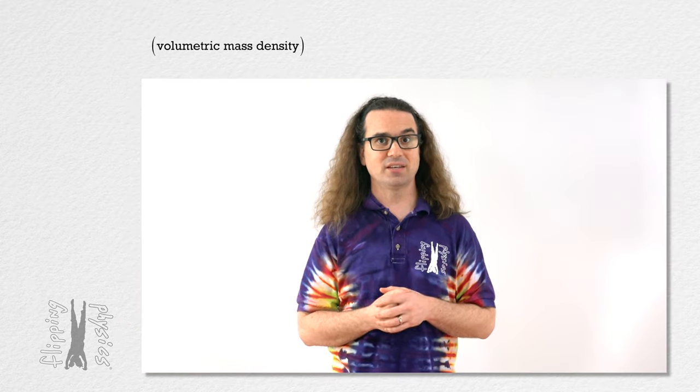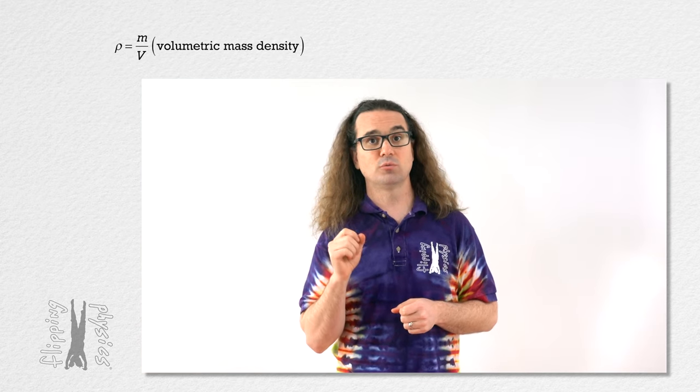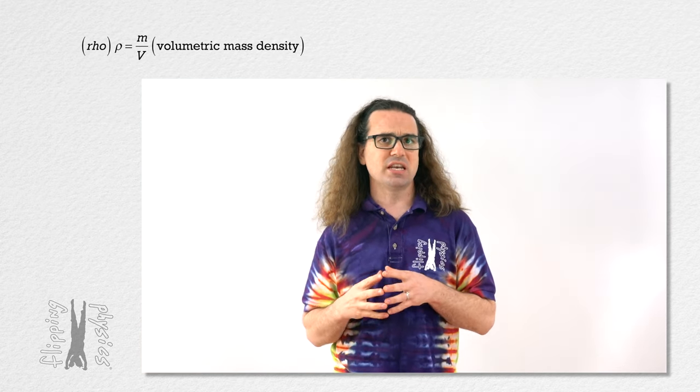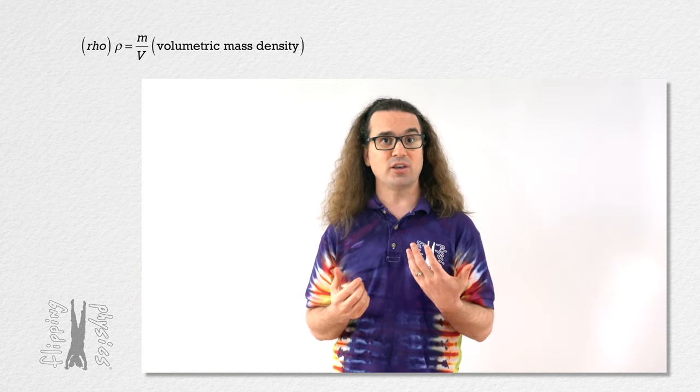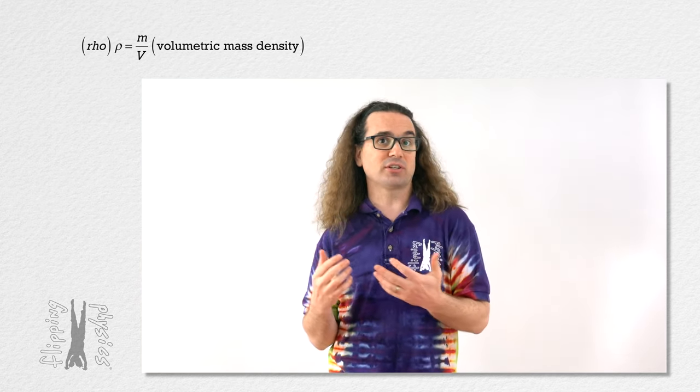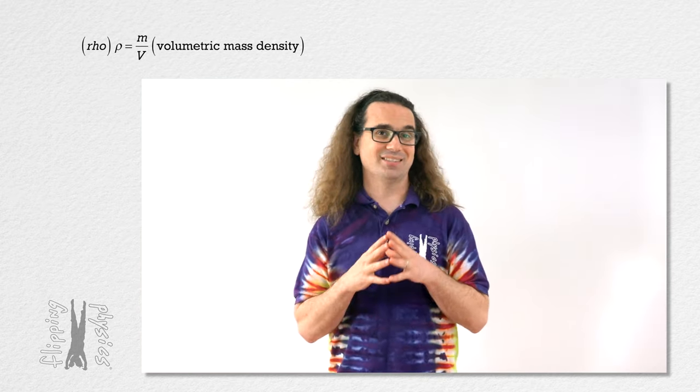Three different kinds of density? Yeah, I thought there was only one called density. Right. Let's start with the one you are most familiar with, which is volumetric mass density, rho equals mass divided by volume. This is actually not the only type of volumetric density which exists. There is also volumetric weight density and volumetric charge density. However, today we are only going to discuss mass densities.